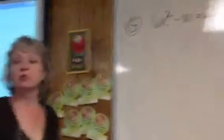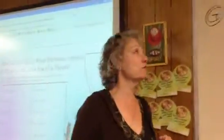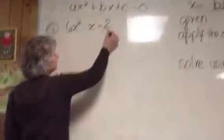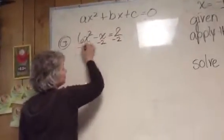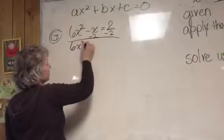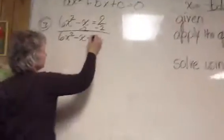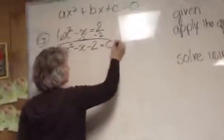So the first thing you're going to do, we're actually going to add a step, which is put it in standard form. So we're going to have to add a negative 2 to both sides first. And why is that? So 6x squared minus x minus 2 equals 0.